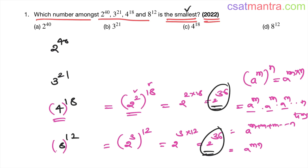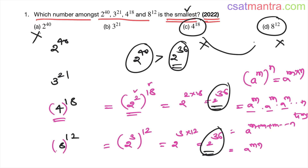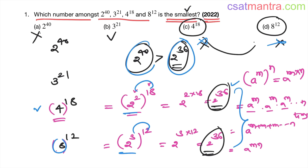If both 4 power 18 and 8 power 12 are equal, both cannot be the answer for smallest, so the question would be ambiguous — eliminate both. Now 2 power 40 is always greater than 2 power 36, so 2 power 40 is also eliminated. That leaves 3 power 21 as our answer.